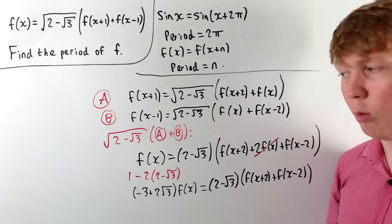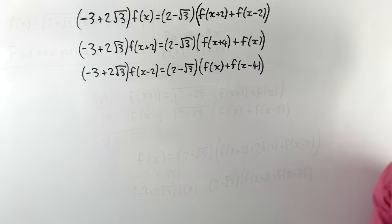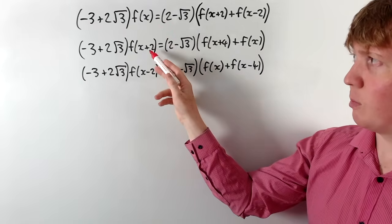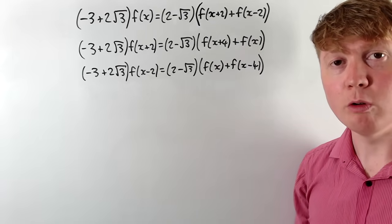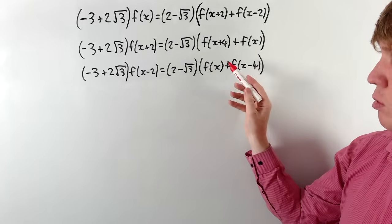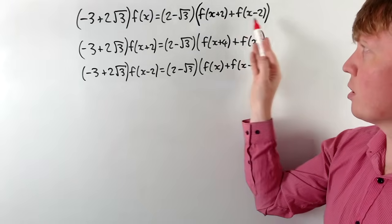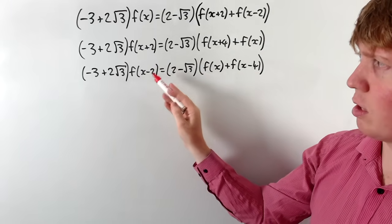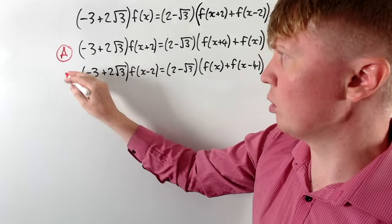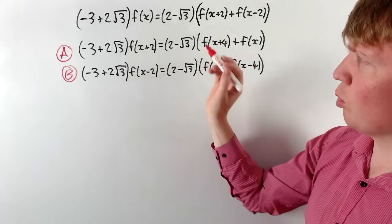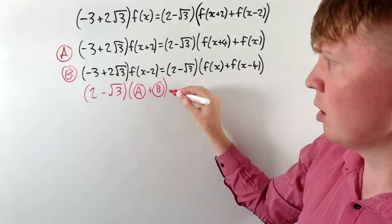Now we can do the same thing again: replace x by x+2 and also by x-2. In the second row, replacing x by x+2 means x+2 goes up to x+4, and x-2 goes up to x. For the third row, replacing x by x-2 means x+2 goes down to x, and x-2 goes to x-4. We can see we have f(x+2)+f(x-2) appearing, so if we add the two equations we get that expression, but we also need the factor of (2-√3). Labeling these again as a and b, we multiply both equations by (2-√3) and add them together.